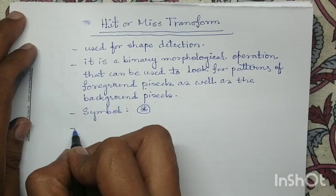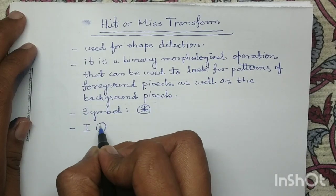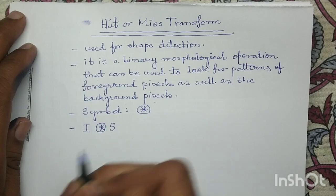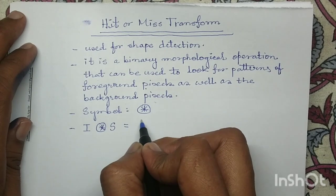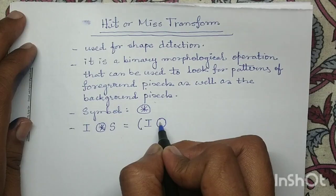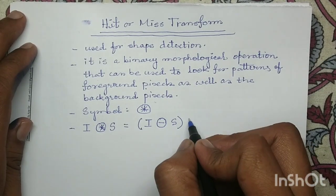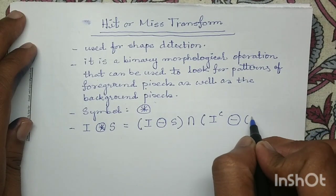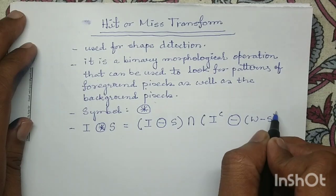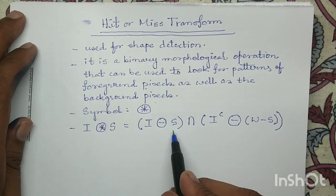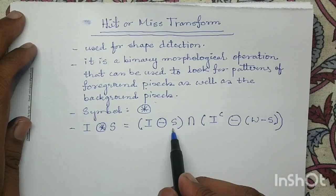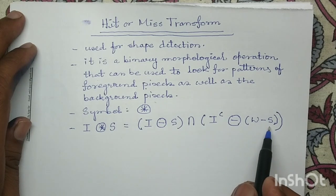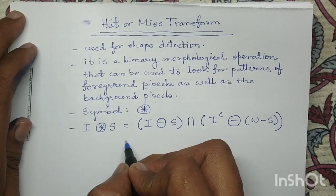The mathematical equation of Hit or Miss Transformation is given as: I Hit-or-Miss with structuring element S, equals I erosion with structuring element S, intersected with I complement erosion with W minus S. Here, structuring element S is used to observe the pattern of object pixels, and W minus S is used to observe the pattern of background pixels.